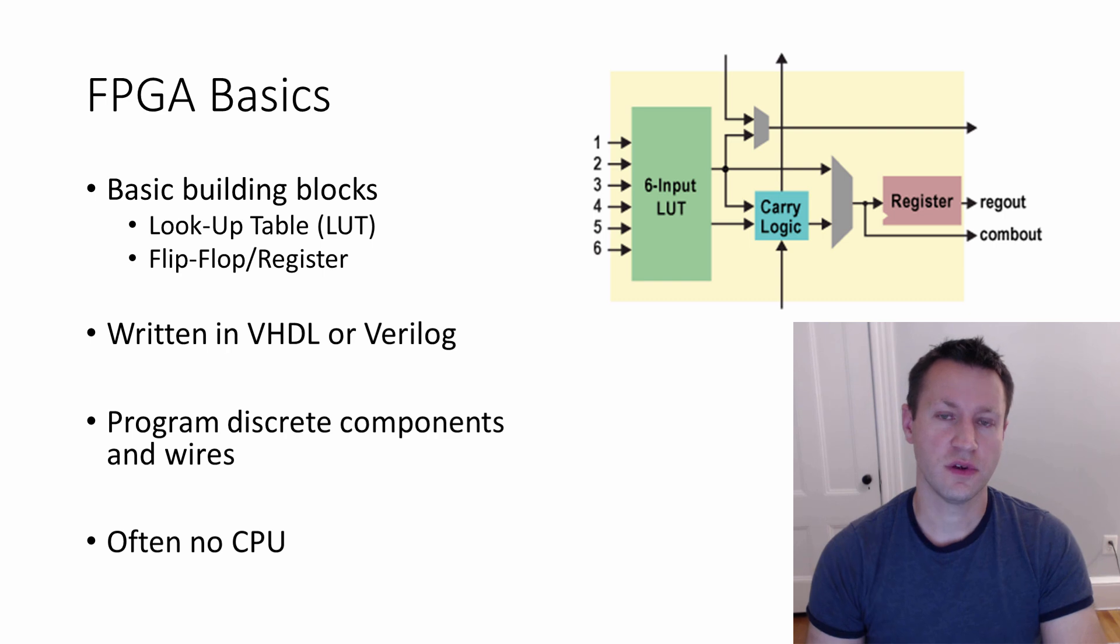And so it's a very different style of programming. Often there's no CPU, no central processing unit at all. You can have one in some FPGAs. You can instantiate a hardcore processor built into the FPGA fabric or a soft core processor. You can literally make your own CPU out of flip-flops and LUTs, which is pretty cool. But a lot of times you really don't need one for an FPGA.